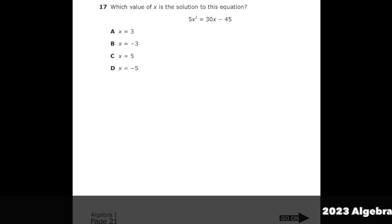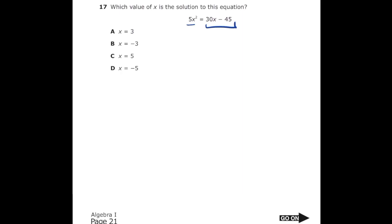This is number 17 from the 2022 Algebra 1 EOC. Which value of x is the solution to this equation? We have 5x squared equals 30x minus 45. The first thing I want to do is get everything on the same side. I'm going to leave 5x squared where it is because I want that term to be positive, and I'm going to get 30x and minus 45 back over to that side. So all we have to do is just change the signs. We're going to end up with 5x squared minus 30x plus 45 is equal to 0.